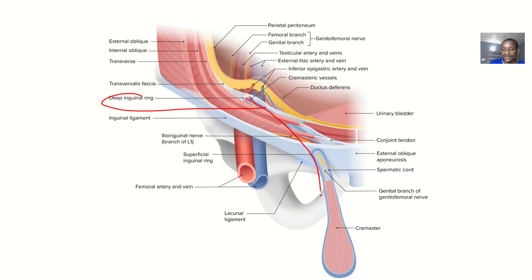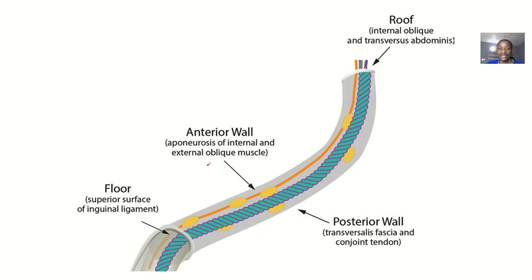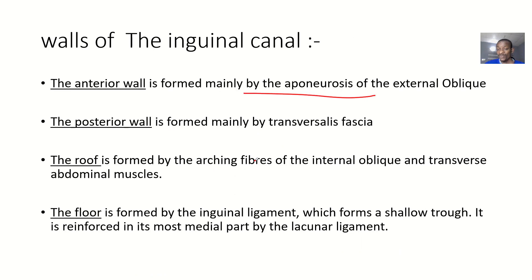So the walls of the inguinal canal — we have the anterior wall. The anterior wall is formed by the aponeurosis of the external oblique muscle. Some sources say both internal and external oblique muscles, but my professor puts only the external oblique muscle, so stick to the external oblique muscle only.